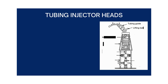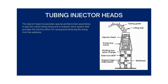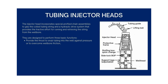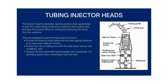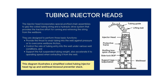Moving on to tubing injector heads. The injector head incorporates special profiled chain assemblies to grip the coiled tubing string in a hydraulic drive system that provides the tractive effort for running and retrieving the string from the wellbore. They are designed to perform three basic functions: provide the thrust to snub tubing into the well against pressure or to overcome wellbore friction; control the rate of tubing entry into the well under various well conditions; and support the full suspended tubing weight, also accelerating it to operating speed when extracting it from the well. This diagram illustrates a simplified coiled tubing injector head rig-up and wellhead blowout preventer stack.